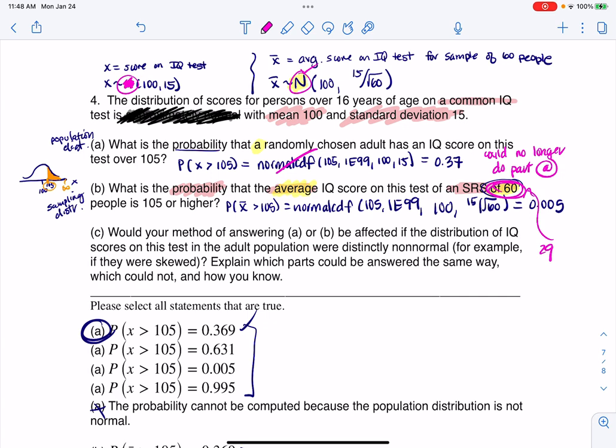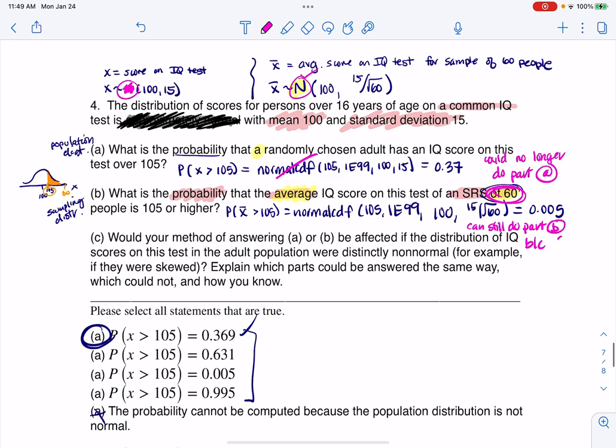It's 60, so I'm okay. So I could still do part B. And that's because of the central limit theorem, which says anytime your sample is 30 or higher in mean land, you're going to know that your sampling distribution is approximately normal.